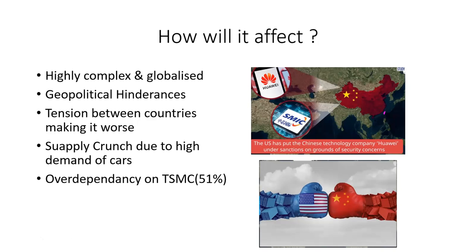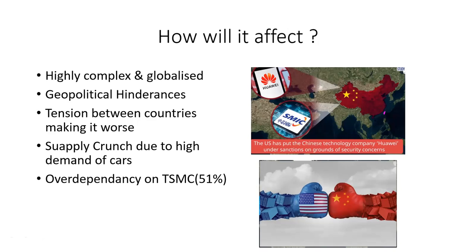There is a supply crunch due to high demand for cars after lockdown effects. As mentioned, EVs and modern cars require a huge amount of chips, so there is a high demand post-lockdown creating a chip supply crunch. The fifth factor is over-dependency on TSMC — all countries including the USA, Canada, and China are overly dependent on TSMC for their chips, and countries are now looking at that factor.